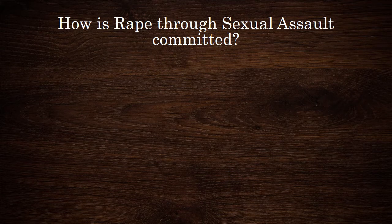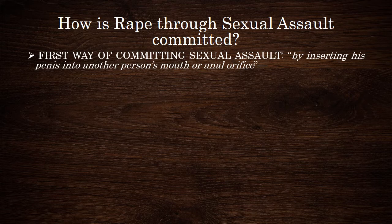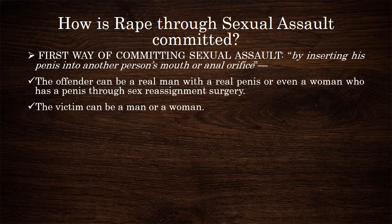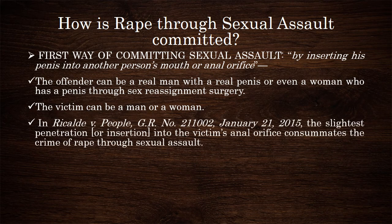How is rape through sexual assault committed? The first way is by inserting the penis into another person's mouth or anal orifice. The offender here can be a real man with a penis, or even a woman who has a penis because of sex reassignment surgery. A biological woman cannot be the offender in this first way, as she does not have a penis. The victim, however, can be a man or a woman, since both have a mouth and an anal orifice. In Recalde v. People, the Supreme Court pointed out that the slightest penetration or insertion into the victim's anal orifice consummates the crime of rape through sexual assault.